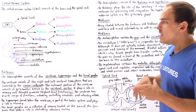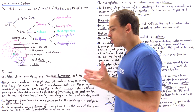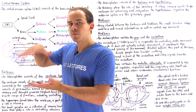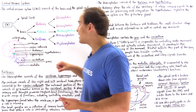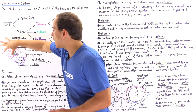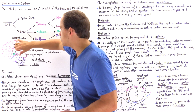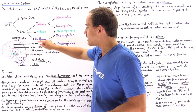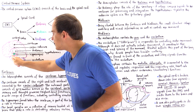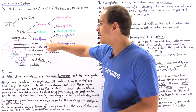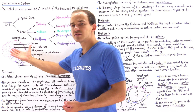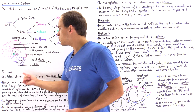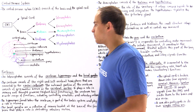The brain contains three important sections. We have the upper portion known as the forebrain — that's the light purple region. We have the midbrain, that's the center green region, and we have the hindbrain, that's the lower portion shown in dark purple.